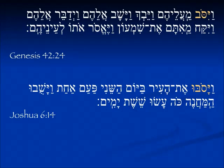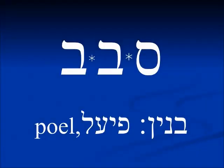Again from Joshua 6, a third person masculine plural — and they went around the city on the second day. When we come to the geminate root in Piel, it begins to look more normal, as we would expect a Piel to look. And we're going to look at some examples.